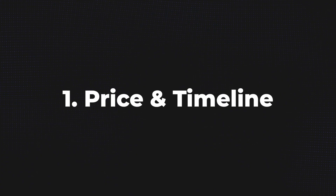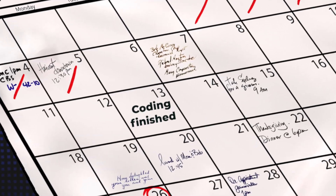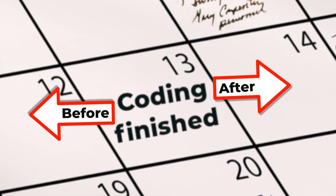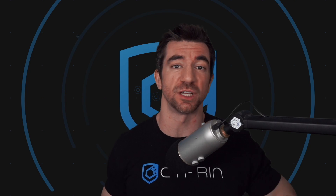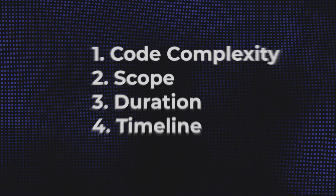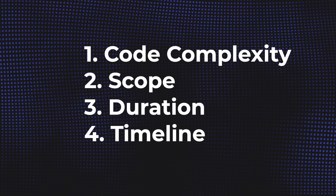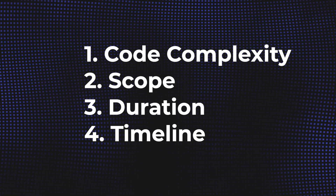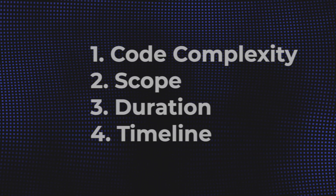A typical audit looks like this. First, price and timeline: a protocol needs to reach out, and they can do so before or after their code is finished. Ideally, they reach out sometime before their code is finished so the auditors can have time to slot them in. Once they reach out, the protocol and auditors will discuss how long the audit will take, based on scope and code complexity.